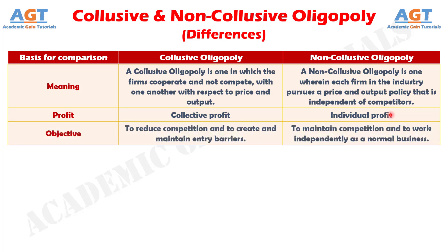Difference No. 3: Firms operating under oligopolistic competition often enter into a collusive agreement to avoid uncertainty caused by interdependence and to avoid price wars and cutthroat competition. On the other hand, the aim of a non-collusive oligopoly is to maintain competition and to work independently as a normal business.